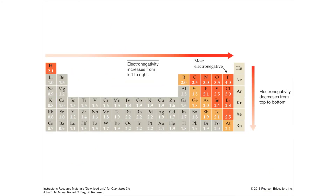Electronegativity values are unitless numbers, and every element has one based upon ionization energy and electron affinity — fluorine is the highest. If you subtract the electronegativity values of two bonded atoms, you'll see a difference. For example, take a fluorine-fluorine bond: 4 minus 4 is zero, meaning they're sharing perfectly equally. There's no side with more electrons than the other — it's an equal, non-polar share.